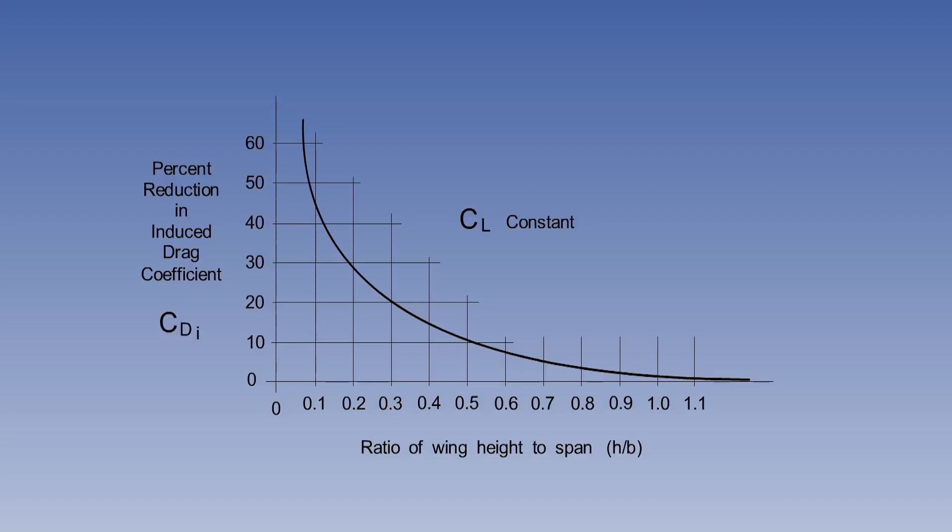If we take a few examples from the graph on the screen, which plots reduction in CDI against the ratio of height to wingspan, or H over B, we can see that for an aircraft with a wingspan of 40 meters, or 131 feet...